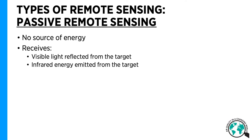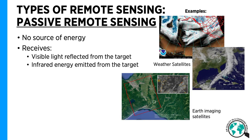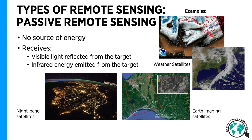The other type of remote sensing is called passive remote sensing, and it doesn't have any source of energy of its own. But what it does is it receives visible light that's reflected from the target, or infrared energy emitted from the target. And in some cases, it does actually measure visible light emitted from a target, for example nighttime imagery. Some examples include weather satellites, earth imaging satellites, and night band satellites.